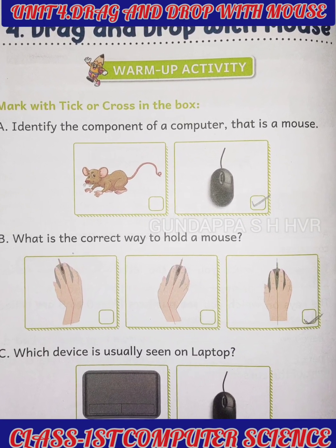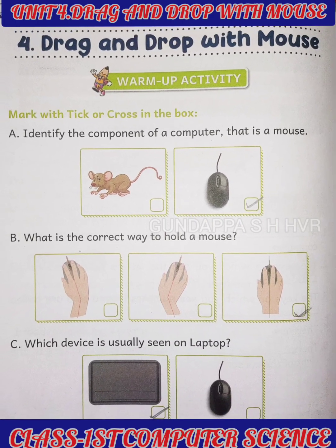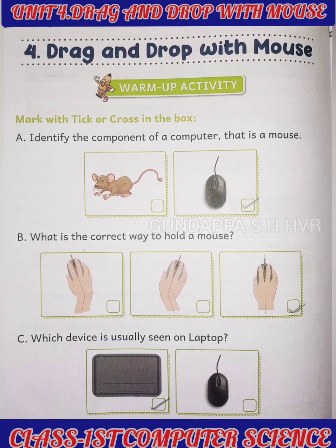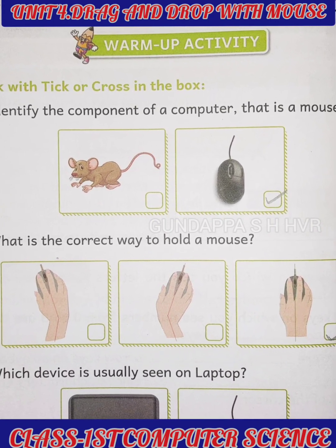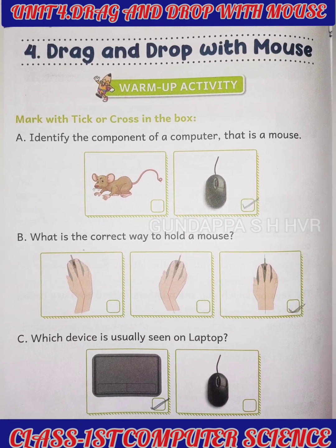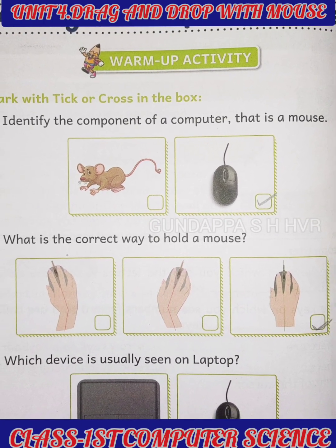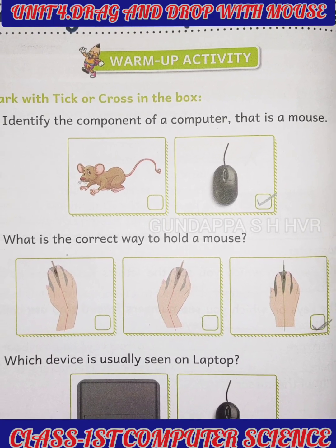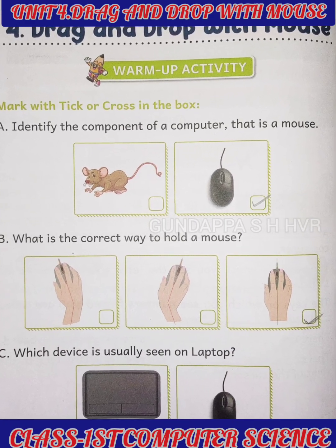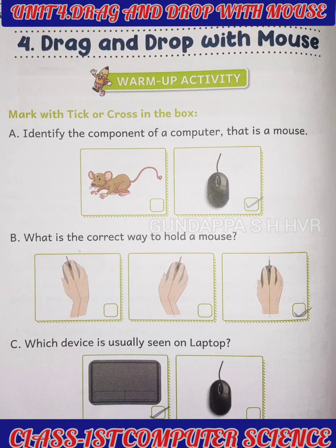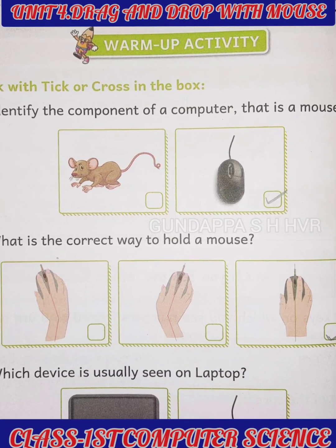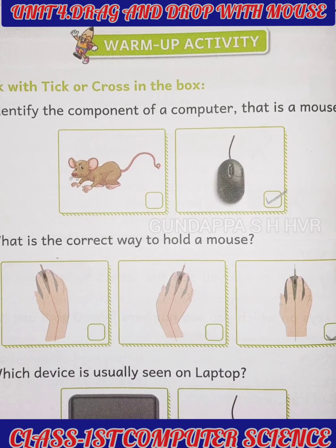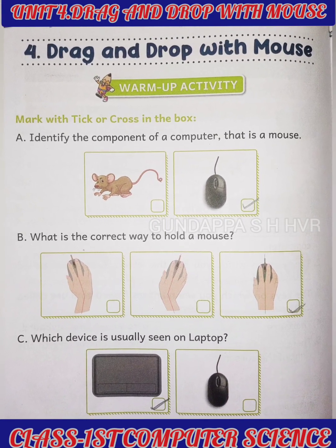The unit we are going to talk about in today's video is Unit 4: Drag and Drop with Mouse, from your class first computer science textbook. First they gave a warm-up activity: mark with tick or cross in the box. Identify the component of a computer that is a mouse. Mouse is also one part of a computer.